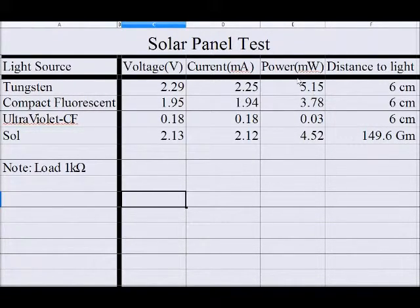Tungsten had a power output of 5.15 milliwatts, compact fluorescent 3.78, ultraviolet was 0.03, and the sun was 4.52.